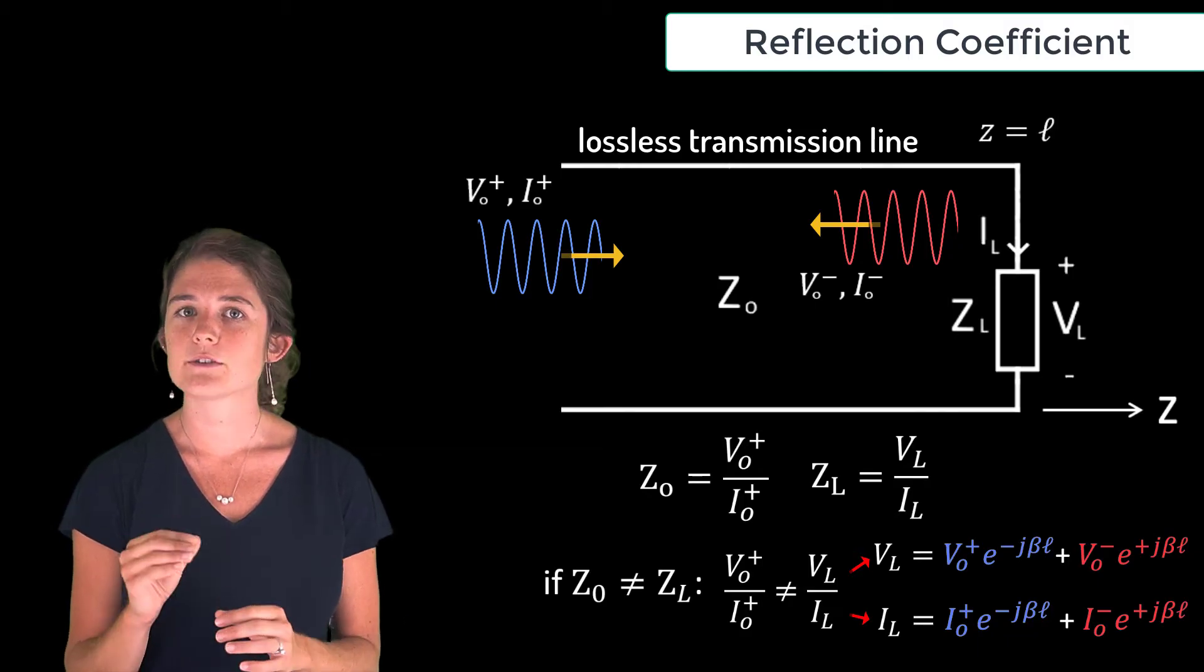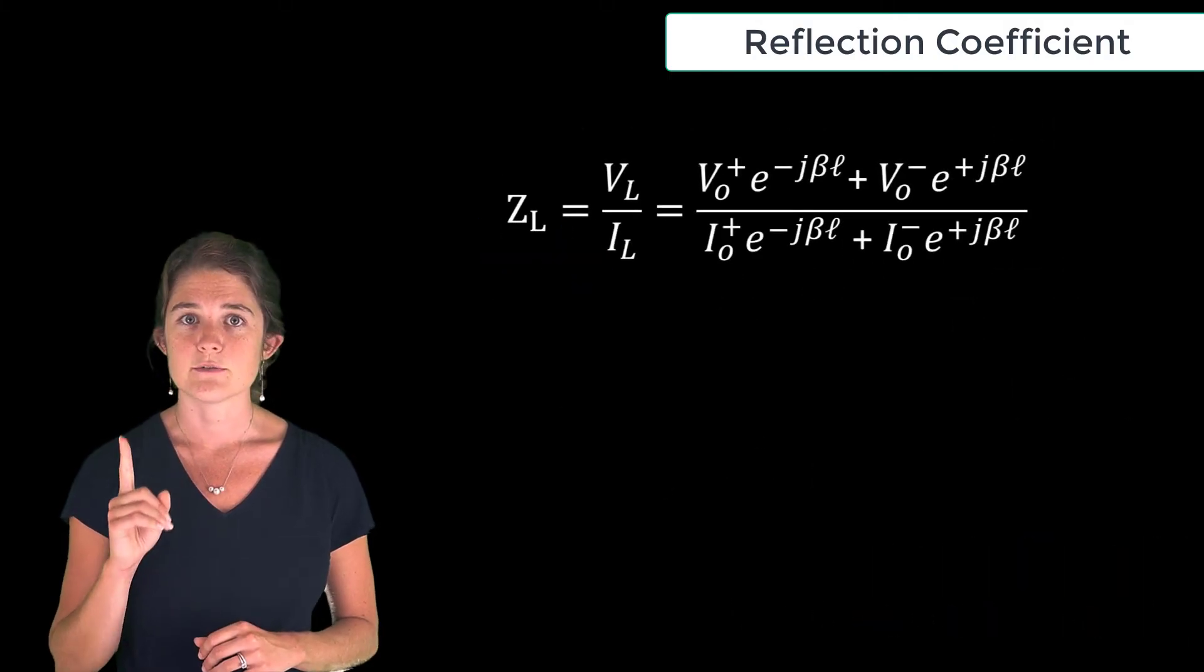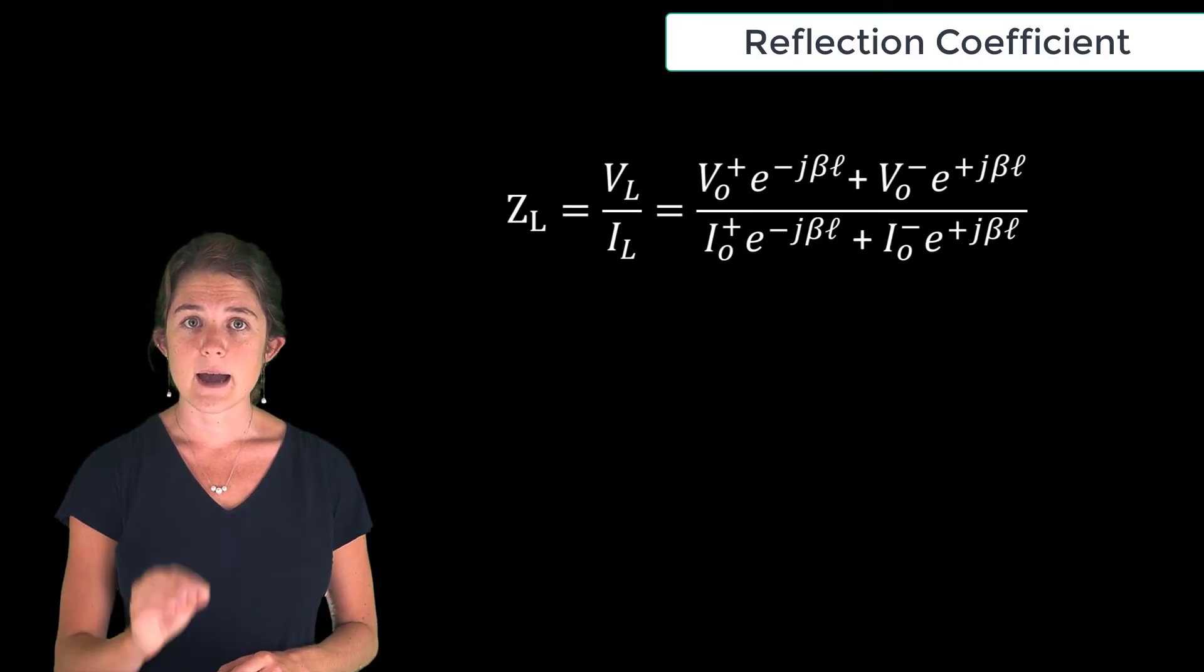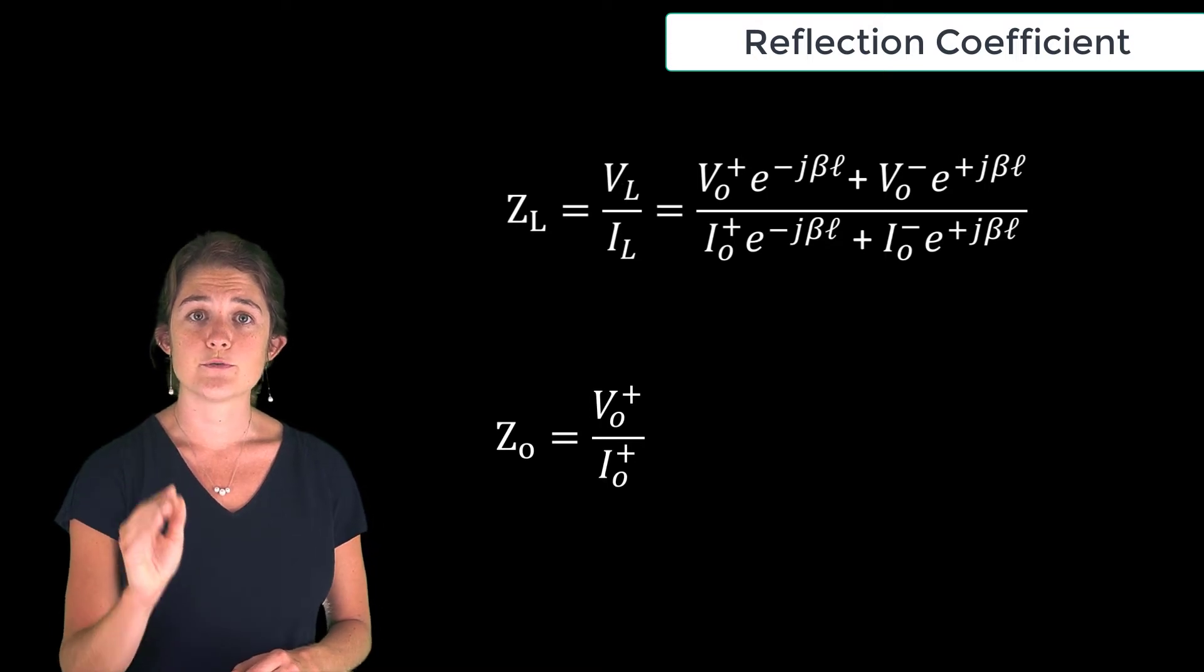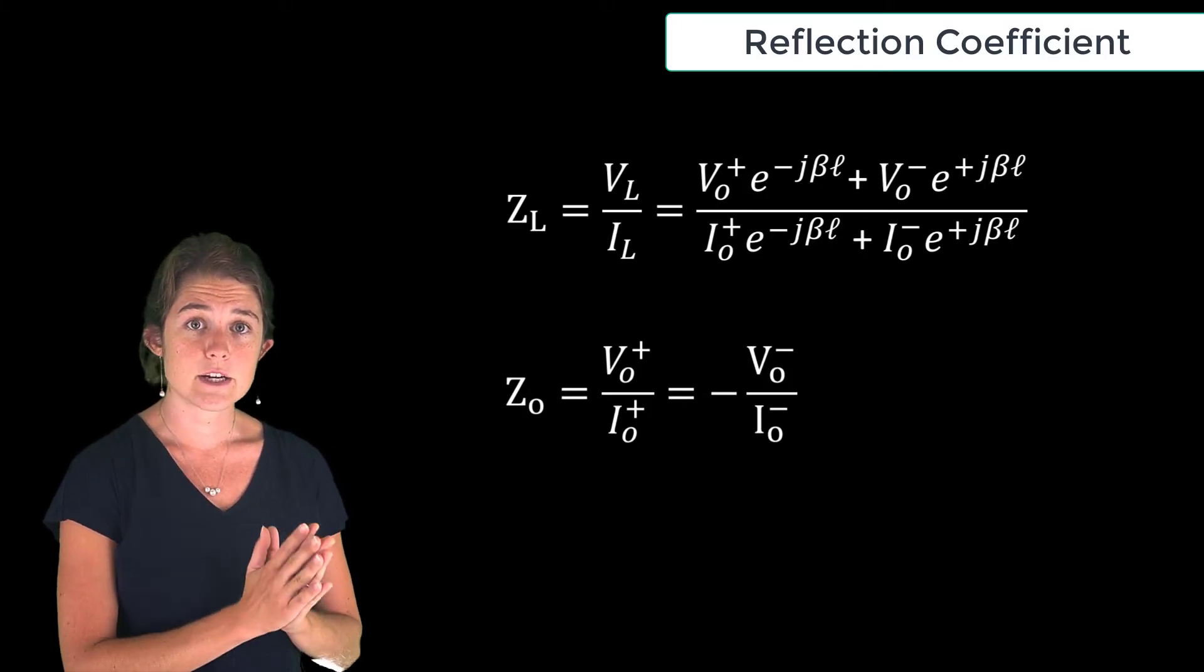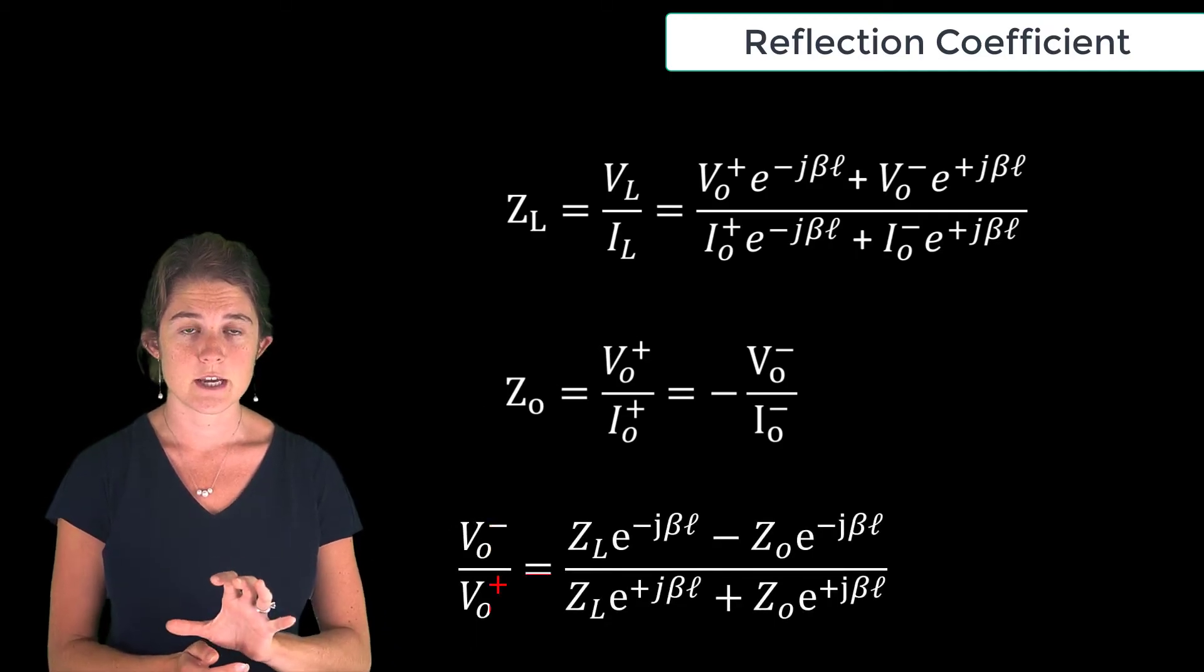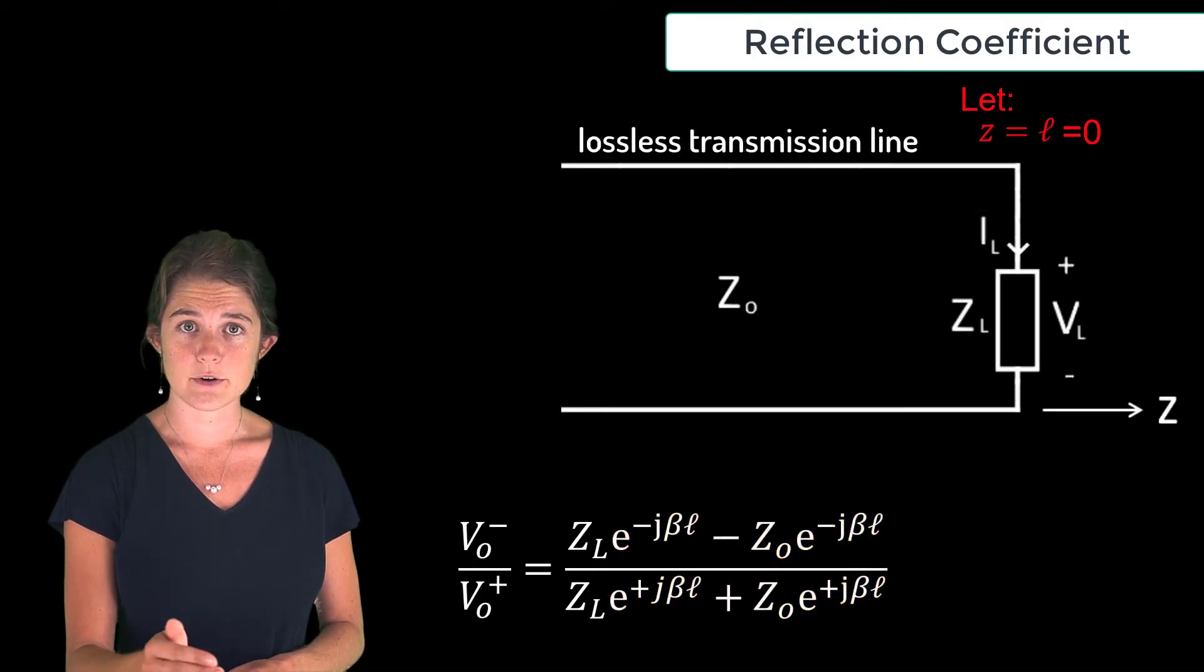To figure that out, let's look at the relationships we already know. Firstly, the load impedance sets the ratio of total voltage to total current. The characteristic impedance sets the ratio of forward voltage to forward current and also the ratio of backward voltage to backward current. We can combine and rearrange these equations to show that the ratio of reflected voltage to input voltage is given here. And if we let the location of the load be the zero location for the z axis, or in other words if we let L equals zero,